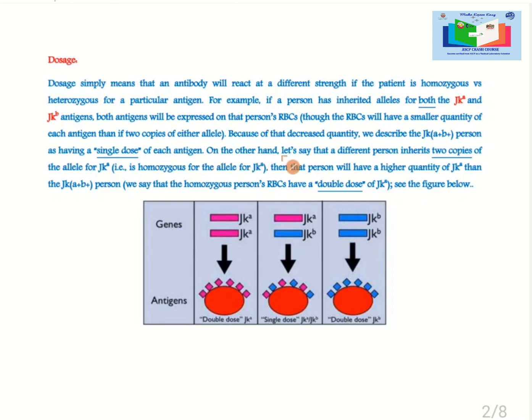On the other hand, let's say that a different person inherits two copies of the allele for JKA. For example, this is homozygous for the allele JKA. Then that person will have a higher quantity of JKA than the JKA plus B plus person. We say that the homozygous person's RBCs have a double dosage of JKA. See the figure below.